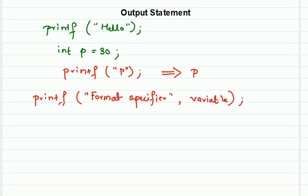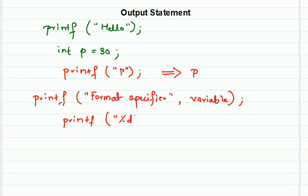The key difference between printf and scanf is that in printf the ampersand sign does not appear before the variable, whereas in scanf the ampersand sign must appear before the variable. For example, to print the value of integer p: printf("%d", p) — no ampersand. Remember: printf is used both to print variable values and to print fixed text. To print a variable's value, specify the format specifier in double quotes and the variable name outside the quotes, with no ampersand.